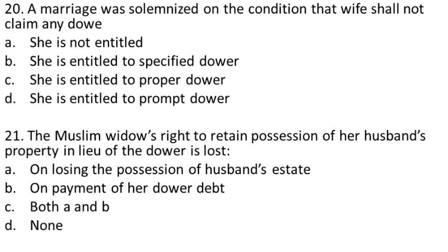Question 20: A marriage was solemnized on the condition that the wife shall not claim any dower. She is — (A) not entitled, (B) entitled to specified dower, (C) entitled to proper dower, (D) entitled to prompt dower. The answer is C: she is entitled to proper dower.